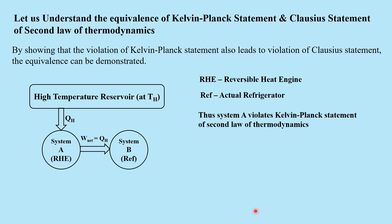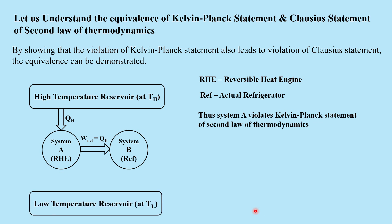Let us take System B, which is an actual refrigerator to which the work output of System A, i.e., the reversible heat engine output, is being provided for the refrigerator to work. While working in a cycle, this refrigerator extracts QL amount of heat from a low temperature reservoir and supplies QH plus QL to a high temperature reservoir. Here, TH is obviously greater than TL.